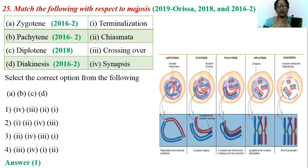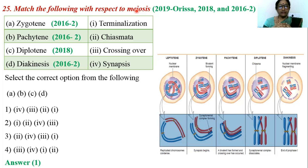Both meiosis I and meiosis II are associated with four stages: prophase, metaphase, anaphase, and telophase. Prophase I of meiosis I is the lengthy phase and is associated with leptotene, zygotene, pachytene, diplotene, and diakinesis stages.